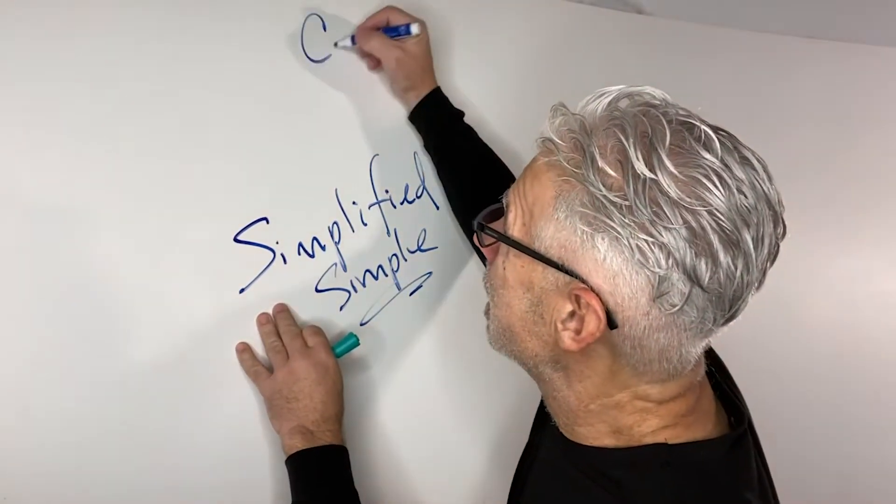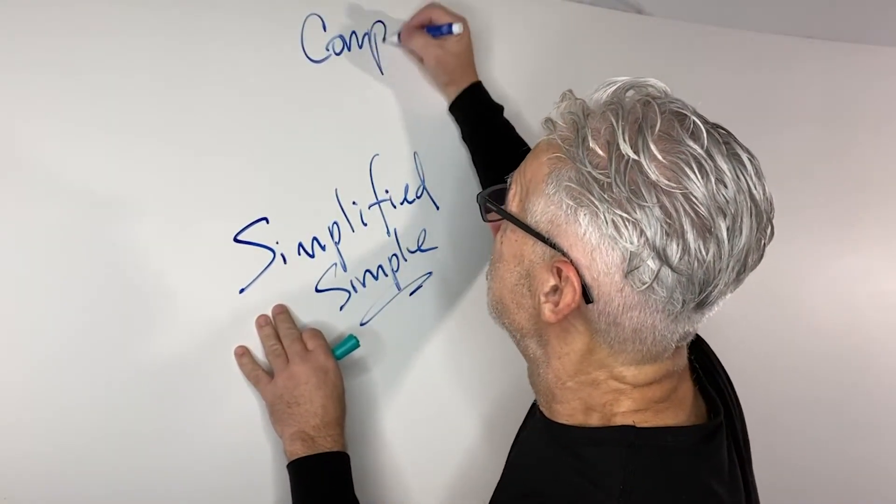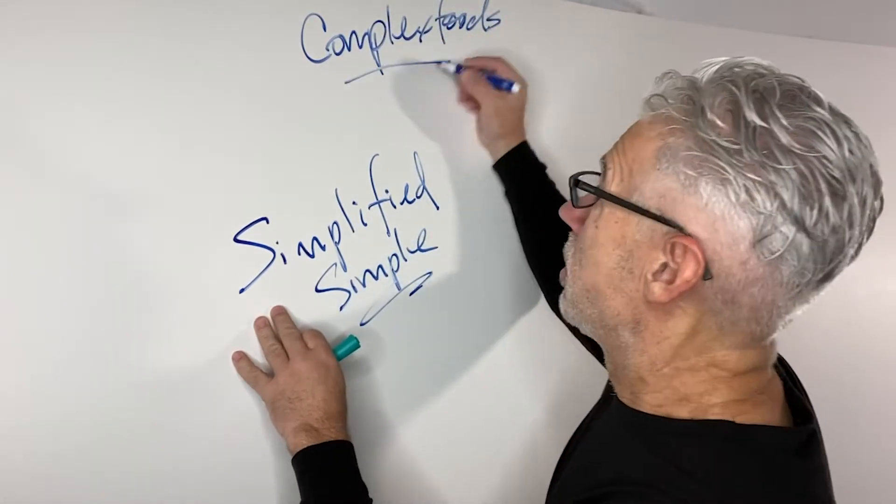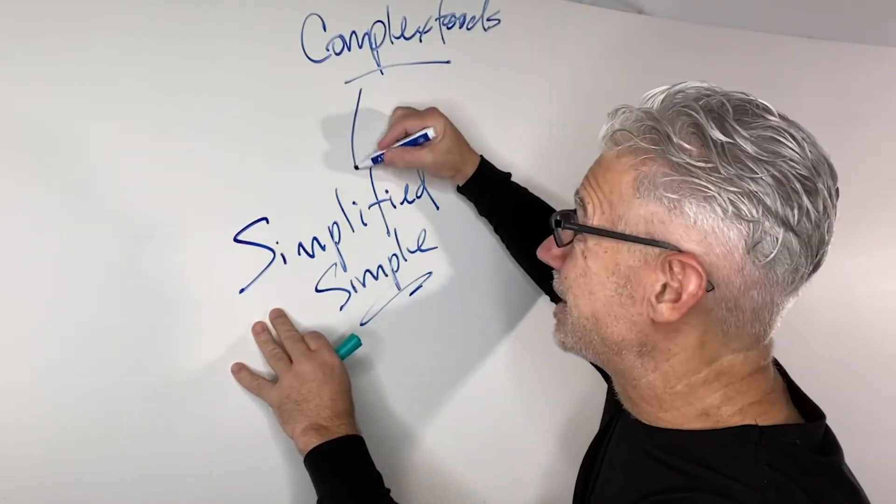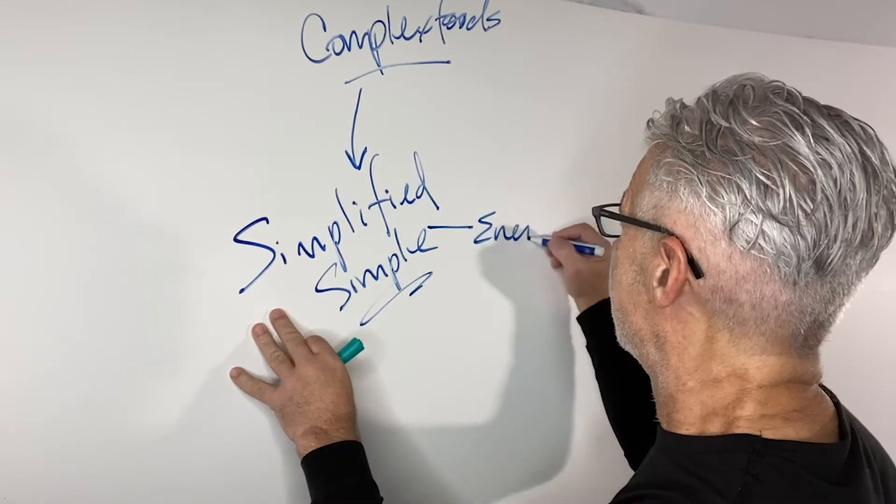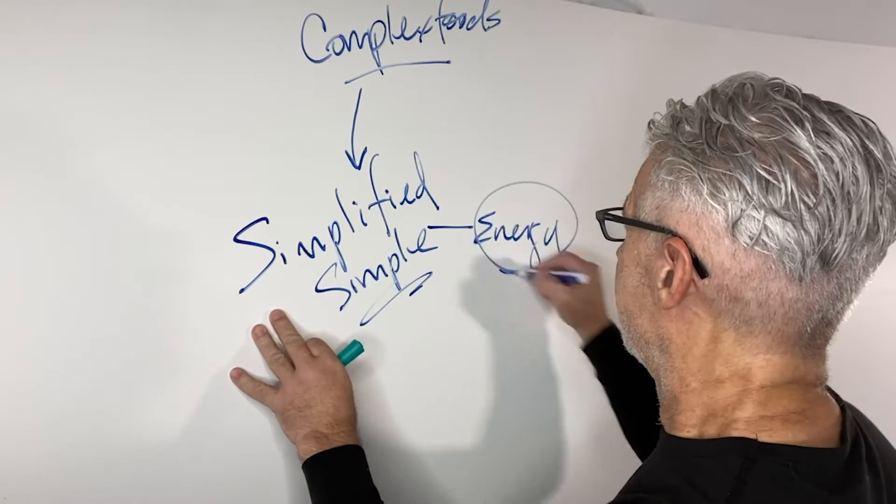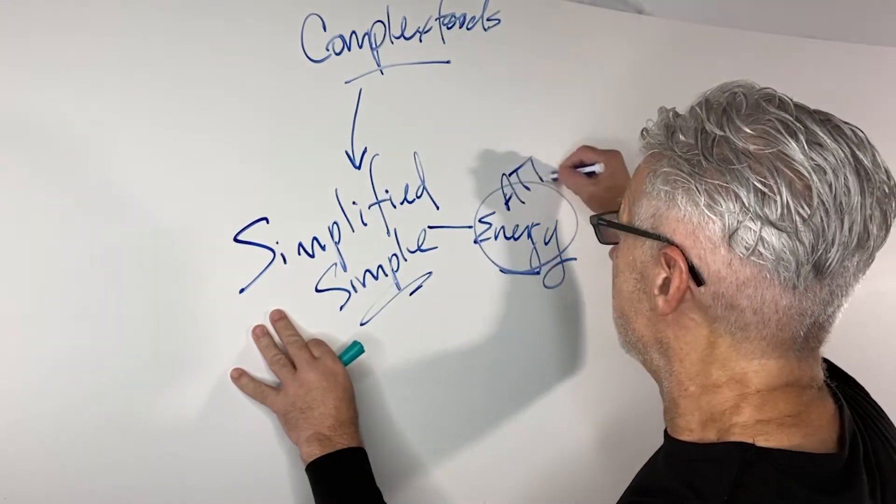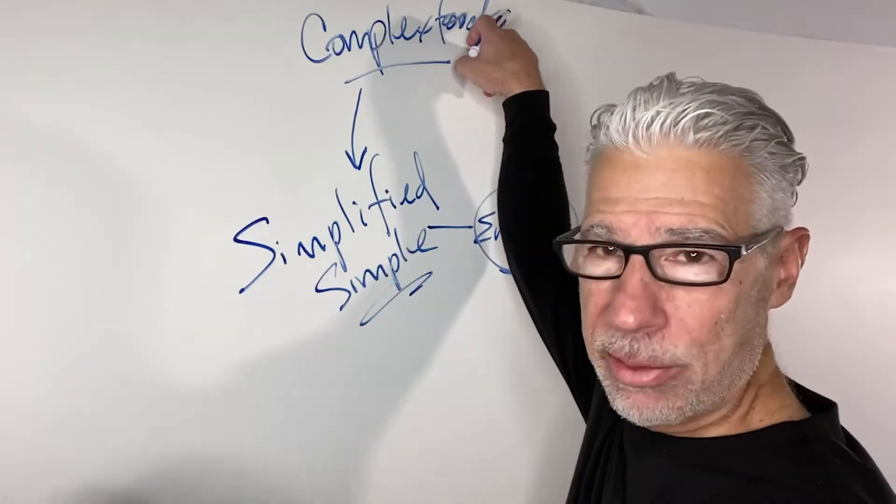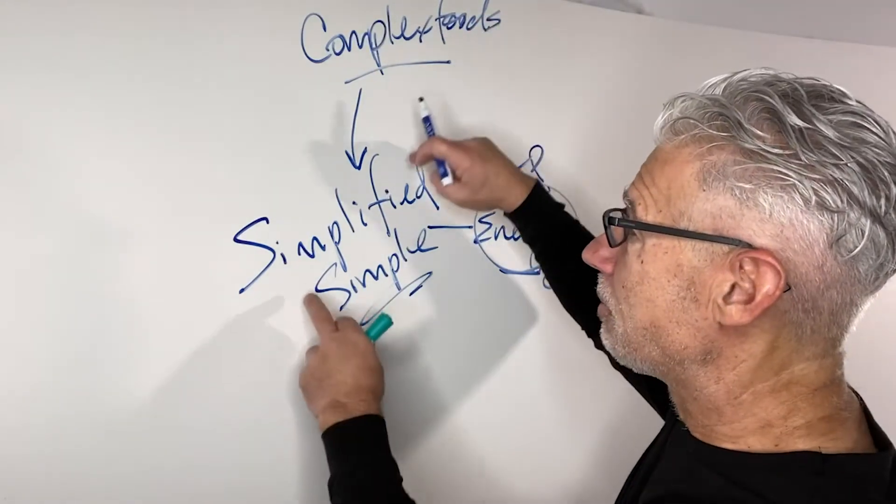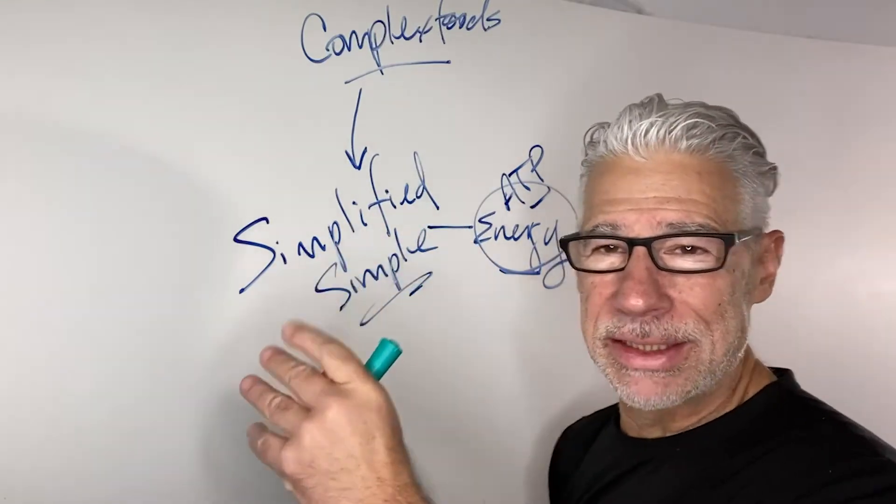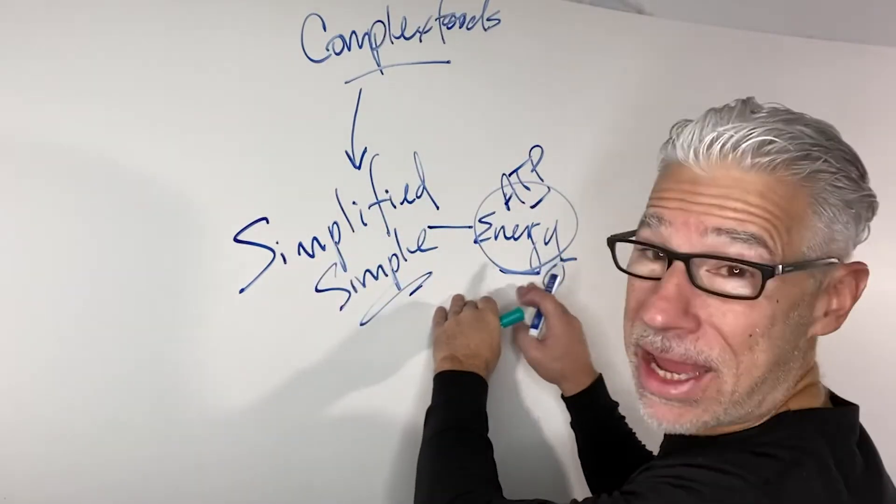We know that we eat complex foods. We must internalize them and simplify them to give us energy in the form of ATP, right? Complex plants and other animal food, we simplify into simple sugars, amino acids, and fatty acids in order to make ATP energy.